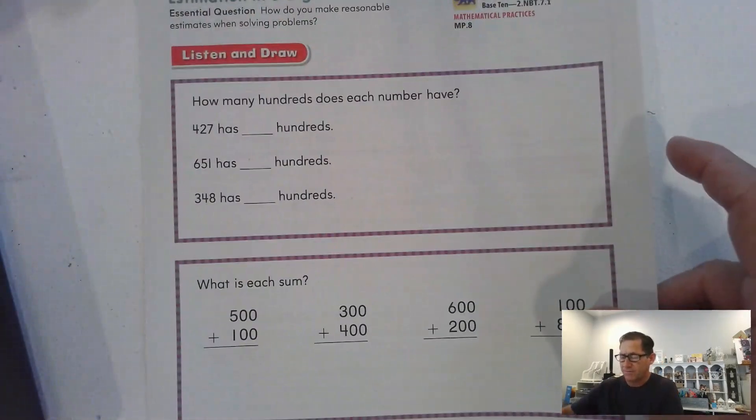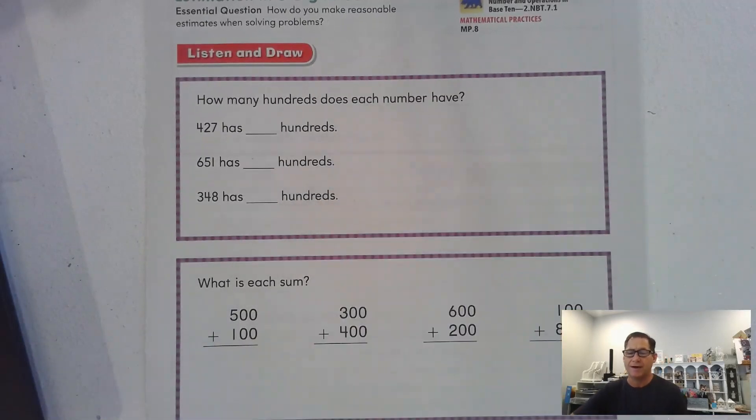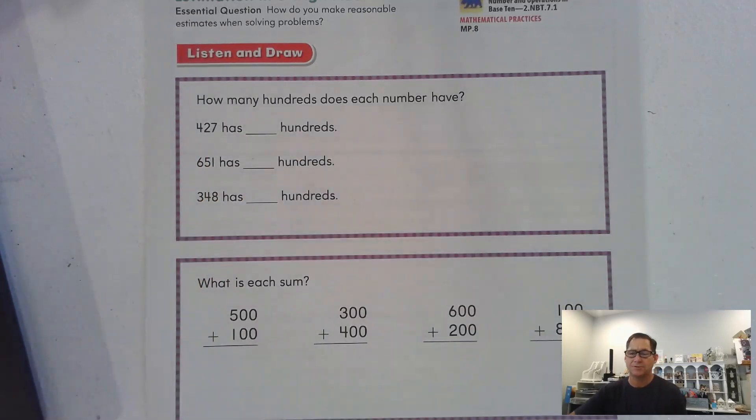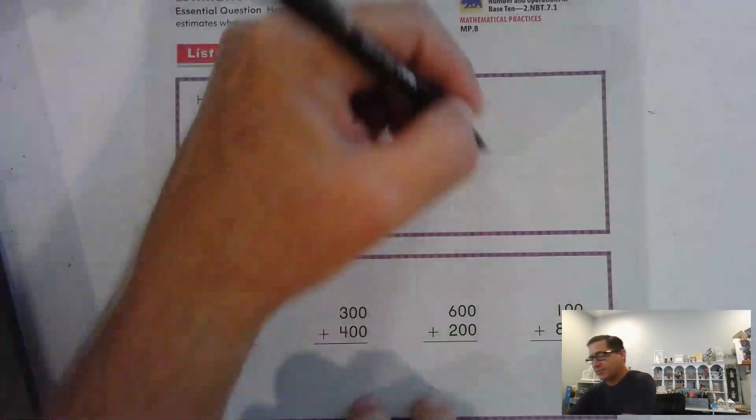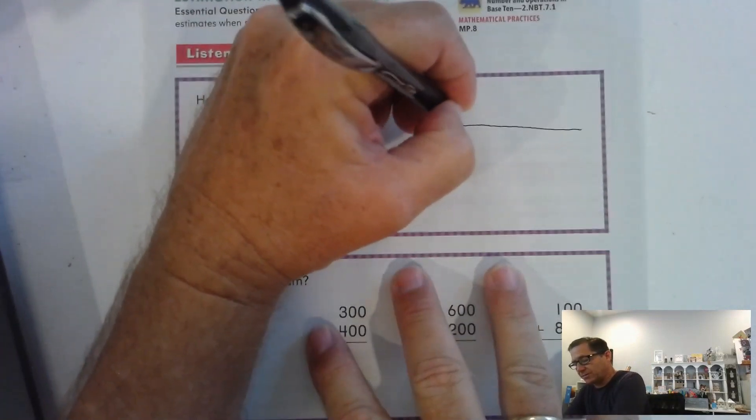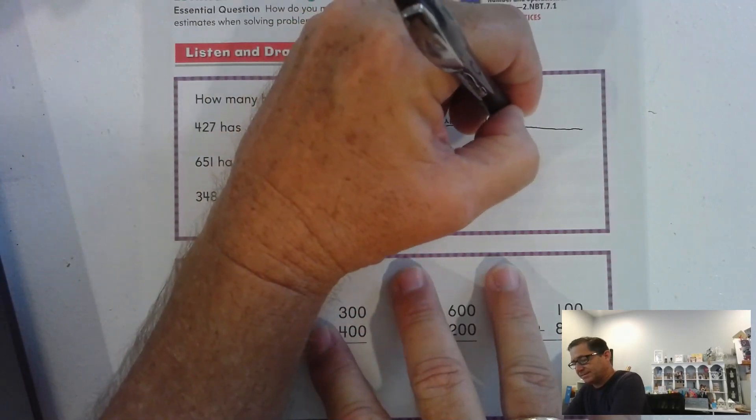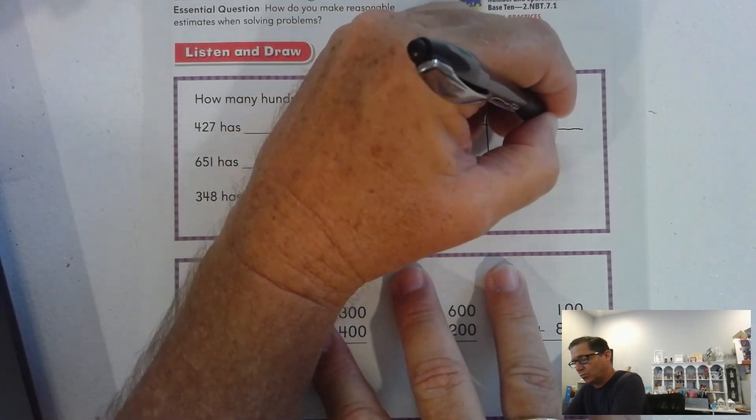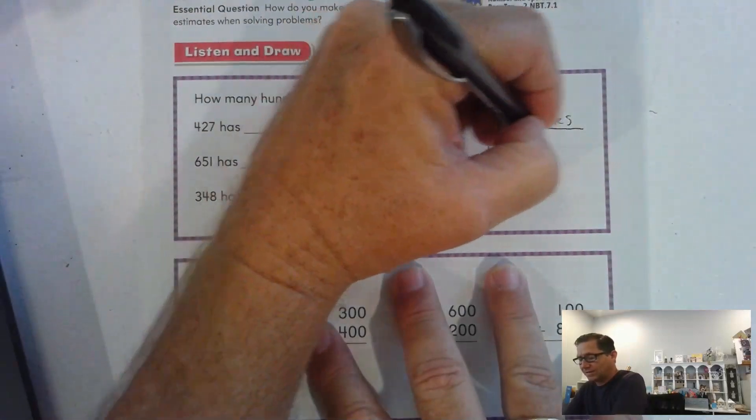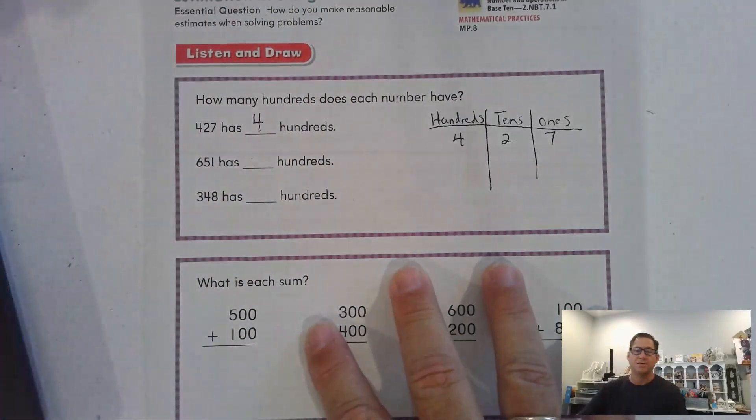So basically, our central question is, how do you make reasonable estimates when solving problems? Let's review some concepts here. How many hundreds does each number have? Look at this number. 427 has how many hundreds? If you need, you can write a place value chart. Hundreds, tens, ones. And so, 427. So, 427 has four hundreds.